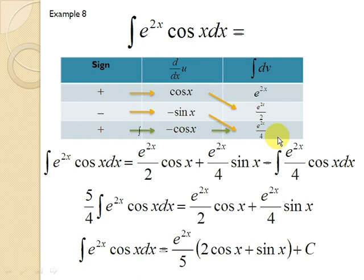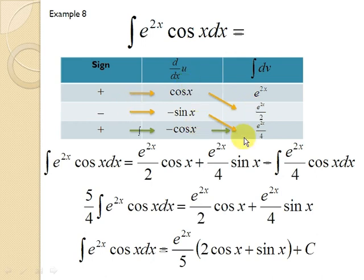The function in the third row is the same as the function in the first row, just with a different coefficient. So we stop here. The integral of e^(2x) cos(x) dx equals e^(2x)/2 times cos(x), plus e^(2x)/4 times sin(x), minus the integral of e^(2x)/4 times cos(x) dx.